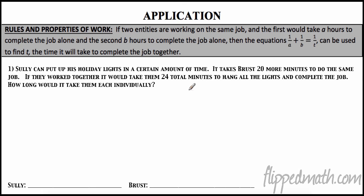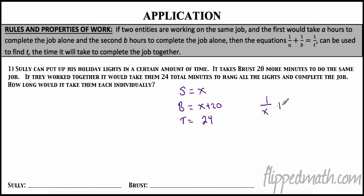Nice application to finish: Sully can put up holiday lights in a certain amount of time x; Brust takes 20 more minutes, so that's (x plus 20). If they work together the total is 24 minutes. So: 1 over x plus 1 over (x plus 20) equals 1 over 24. You can solve that from there. Best of luck on the test and I will see you on the flip side!